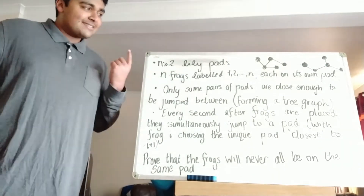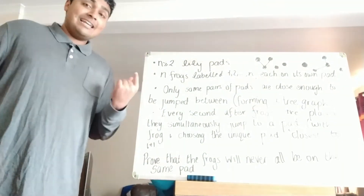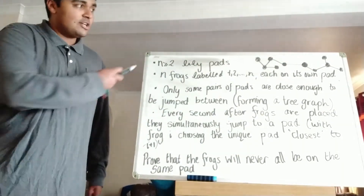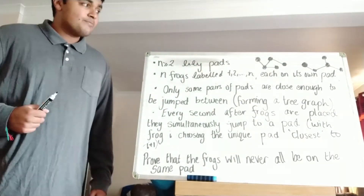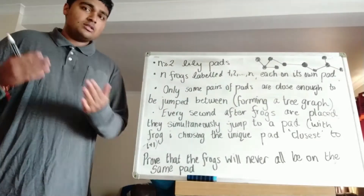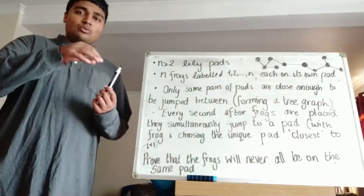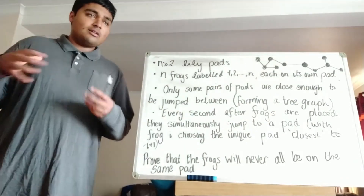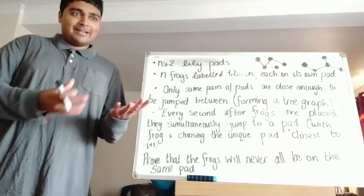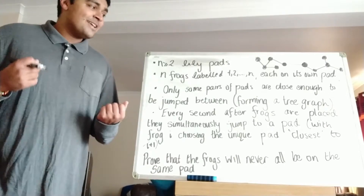This is problem one and it's in fact split into two parts, part one and part two. In this video I'll go over part one and in the next one I'm going to go over part two. I haven't written out the problem in full because it is quite lengthy, so to see a full statement of the problem check out the description. Anyway, this is kind of a summary of the problem: we have n lily pads where n is a positive integer at least two, and we also have n frogs labeled one, two, three all the way up to n. Initially we place each frog on its own unique lily pad.